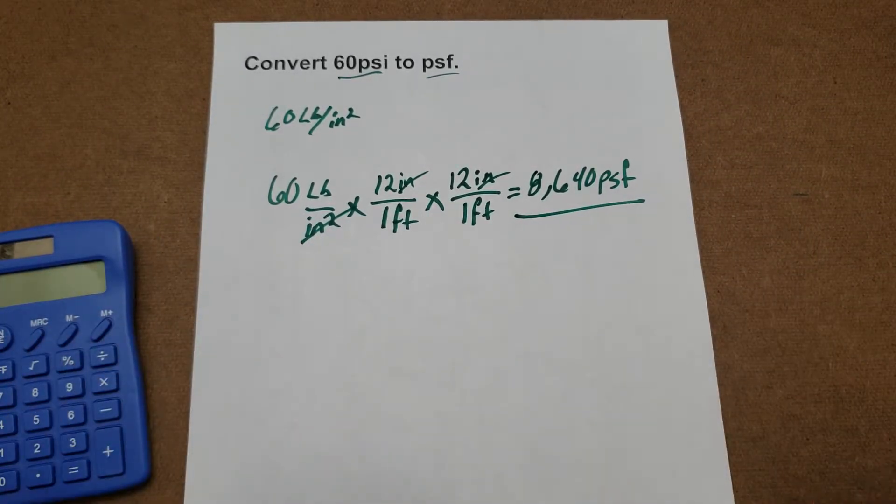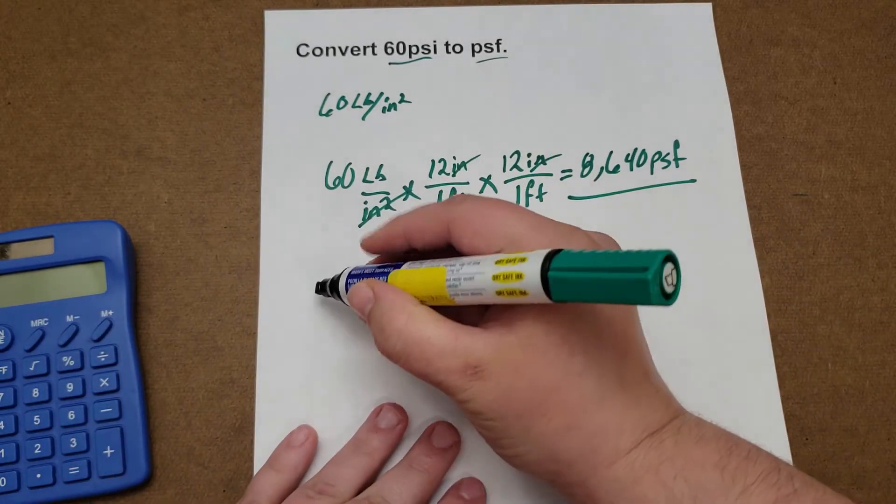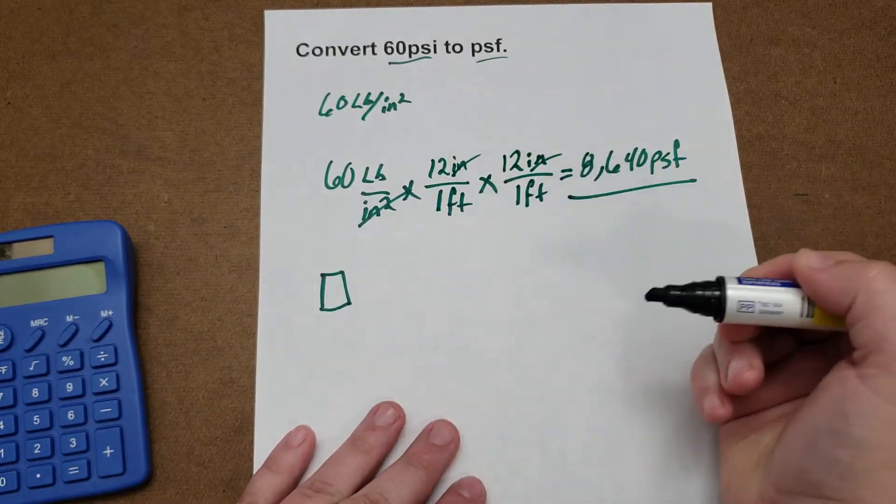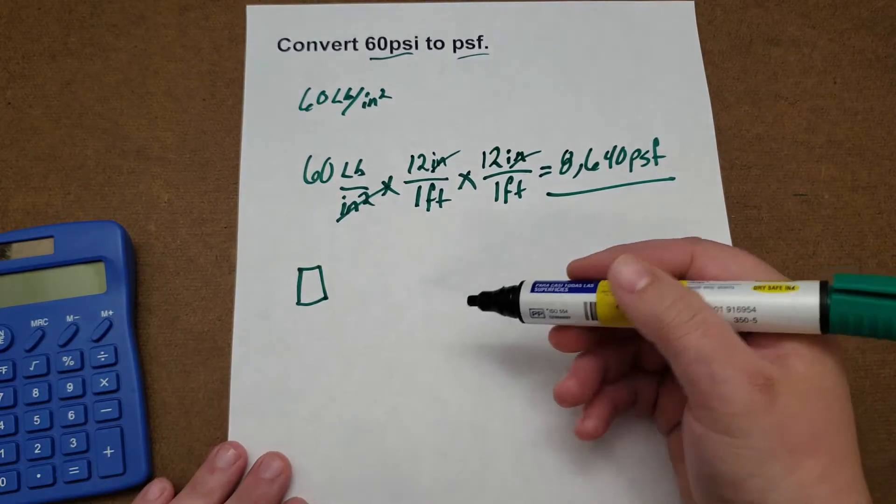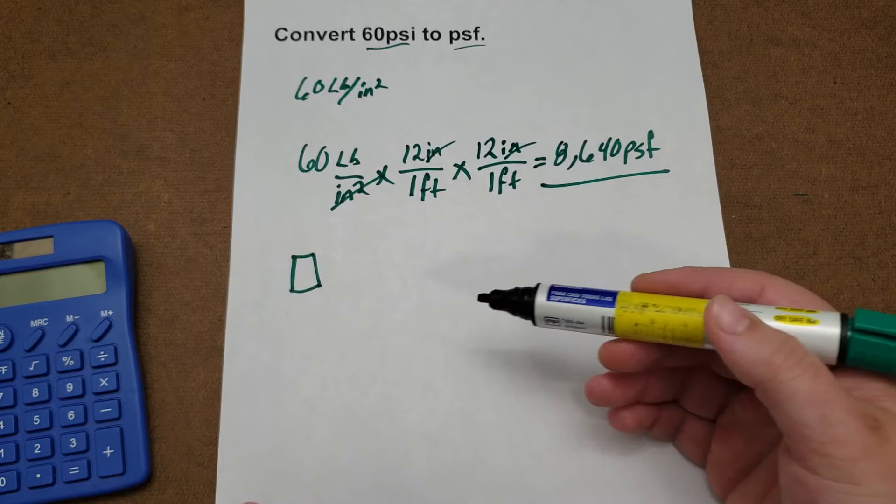Which makes sense, because you're going from the amount of pounds in one little square inch to a full square foot, which is 12 times bigger.